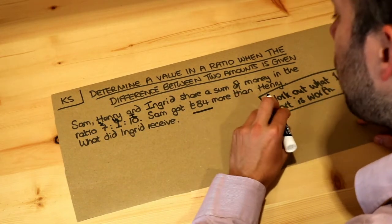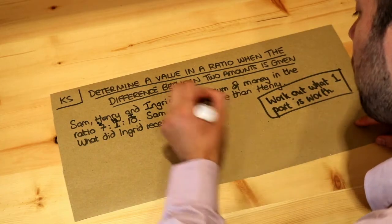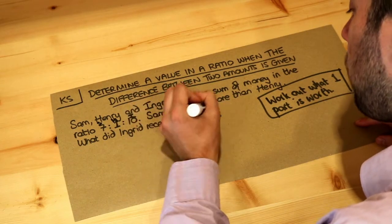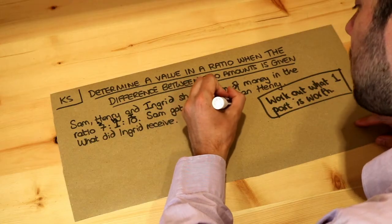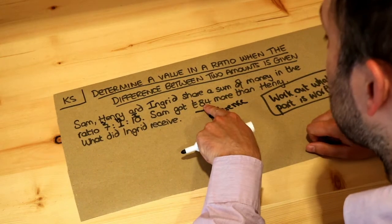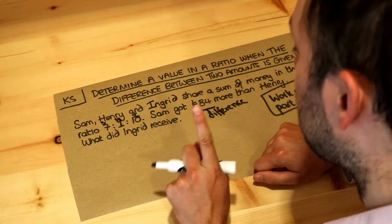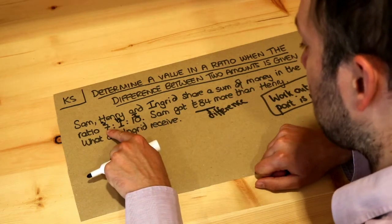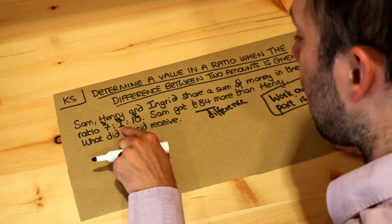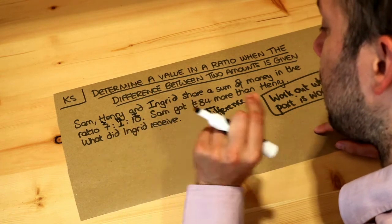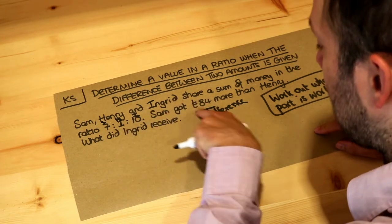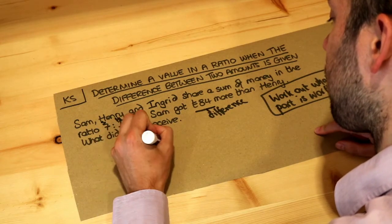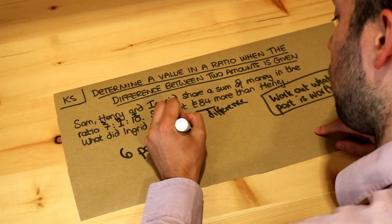We're told that Sam got £84 more than Henry. That represents the difference between what Sam got and Henry got. We look at the difference in parts between what Sam got and Henry got. Sam got 7 parts, Henry got one part — that's a difference of 6 parts to represent this difference. So 6 parts is equal to £84.